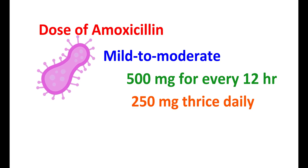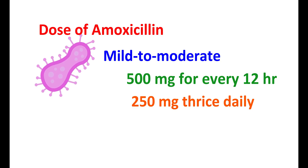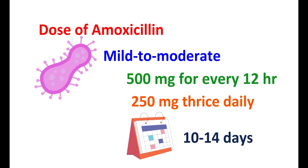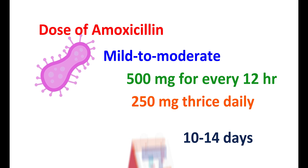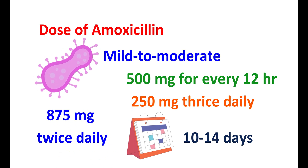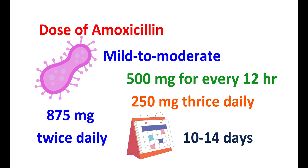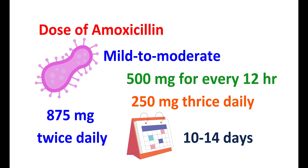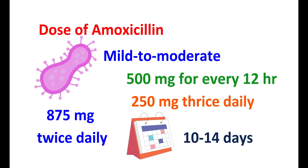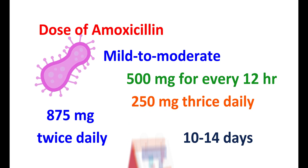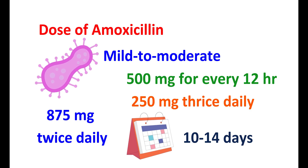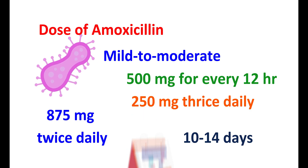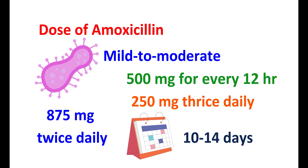For ENT and skin infections, amoxicillin can be used for up to 10–14 days. In case of severe infections, it can be given at 875 mg twice daily, or alternatively 500 mg every 8 hours, for up to 10–14 days. Amoxicillin can be taken with or without food; however, taking it with food can reduce gastrointestinal side effects.